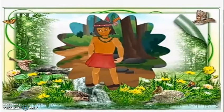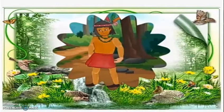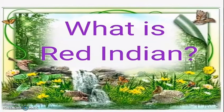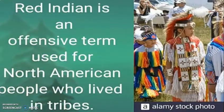We can recall the movie Jungle Book, where a child Mowgli loves the animals and treats them as friends. Like Mowgli, we are going to meet a little boy named Hiawatha in this poem. Hiawatha was a Red Indian young boy. Red Indian is an offensive term used for North American people who lived in tribes.